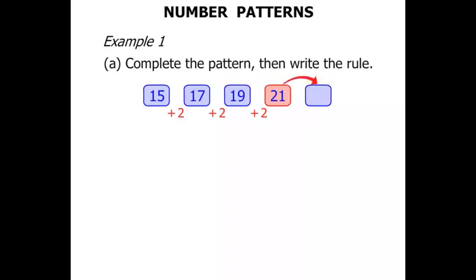From 21 to get to the next number we add 2. 21 plus 2 is 23. So we've completed the pattern. Now for the rule. The rule quite simply is that we added 2. Great!